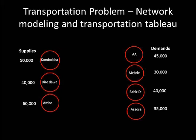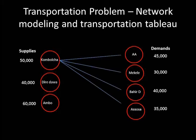Now what remains is to draw arcs showing the transportation of goods from source to destination. Fertilizer from Kombolcha is shipped to each of the four destinations: Addis Ababa, Mekele, Bahir Dar, and Assosa. As discussed, each arc carries two pieces of information: unit transportation cost and amount shipped. The unit transportation cost from Kombolcha to Addis Ababa is 3, to Mekele is 4, to Bahir Dar is 5, and to Assosa is 8. The amount to be shipped to each destination is yet to be determined.